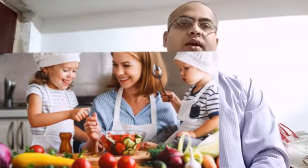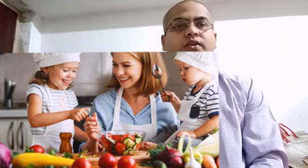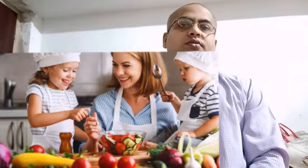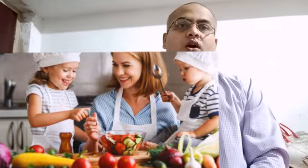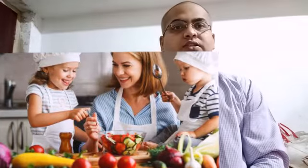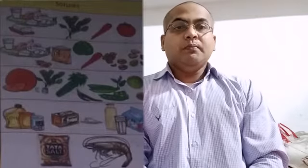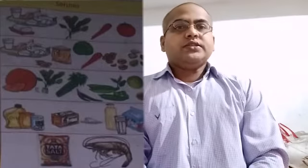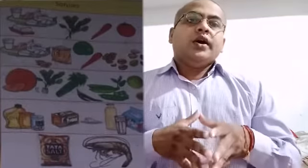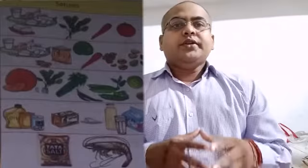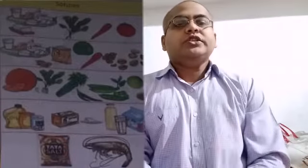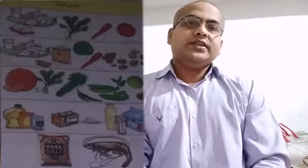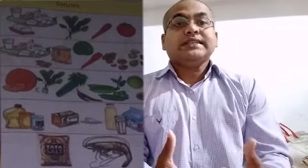If we move to Punjab and observe what people are eating there, normally it is wheat chapati or chapati of maize, different types of vegetables, milk, pulses, and chicken. That is their staple food. So it depends upon the area of an individual — what type of food that individual is eating.